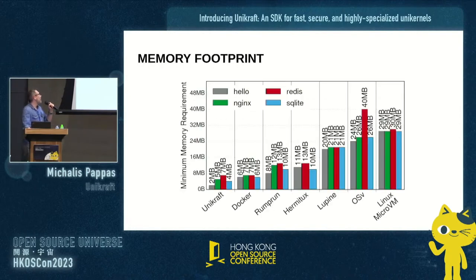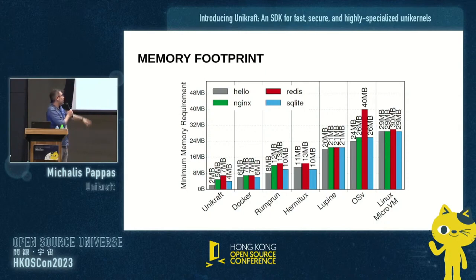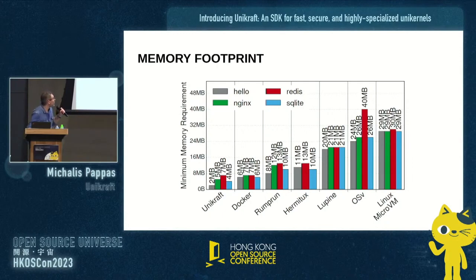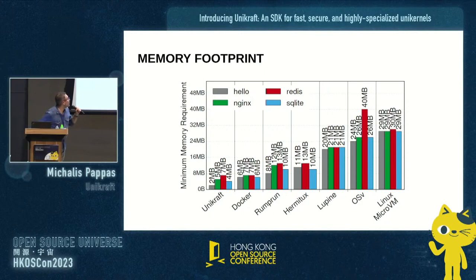When it comes to memory footprint, you can see a comparison of different applications between Unikraft and other systems. We have the smallest memory footprint — you might require just a few megabytes altogether, which means you can deploy many, many instances. Compared to Linux, which is on the other extreme, we have something like a five times reduction for Nginx and Redis, and Linux is already very much optimized.